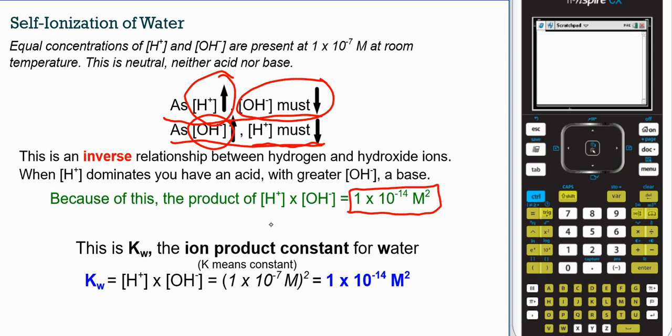So I just mentioned this. The ion product constant for water is this value, 1 times 10 to the negative 14 molar squared. You really don't see this unit expressed much. This number is what's important, is the product of these two concentrations is constant at 25 Celsius, which is lab temperature.